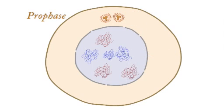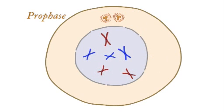In prophase, the chromatin coils and condenses into compacted chromosomes, visible under a light microscope.